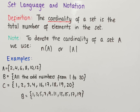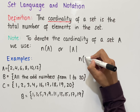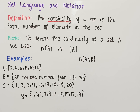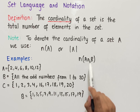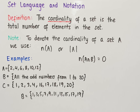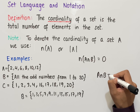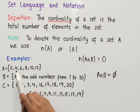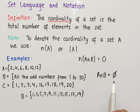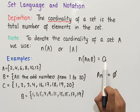We can also use cardinality notation with several other symbols within set notation, such as intersection, union, complement, and so on. Let's work out the cardinality of A intersect B. We first work out what A intersect B is as a set — looking for all elements common in both. In this case, none of the elements in A and B are common, so A intersect B equals the empty set, which contains 0 elements. Therefore, the cardinality of A intersect B is equal to 0.